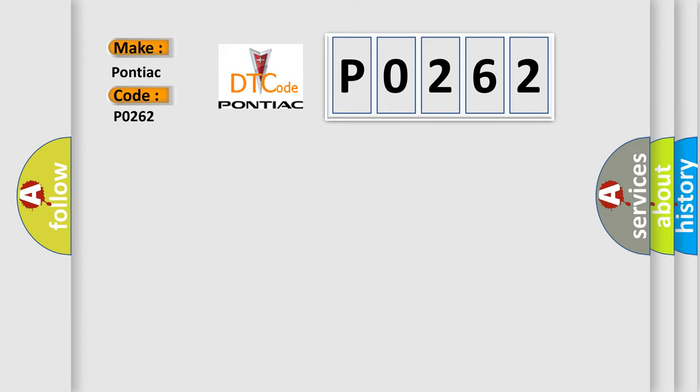The basic definition is: SAS Control Module Yaw Rate Sensor Part Initial Point Correction Error.